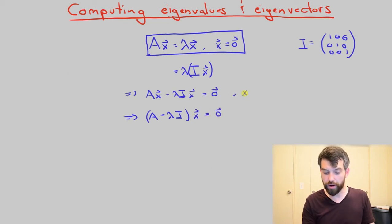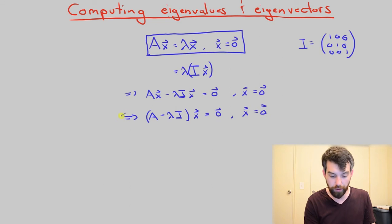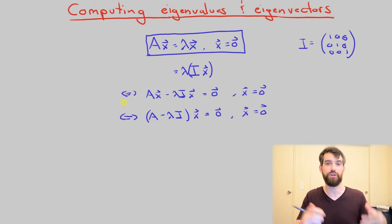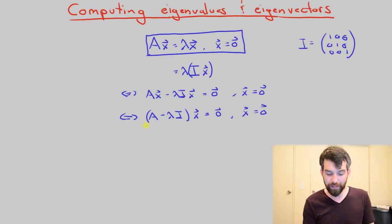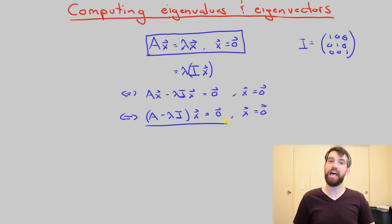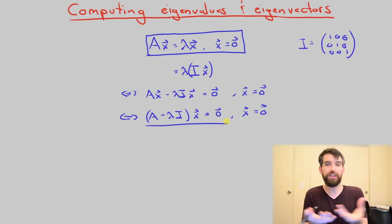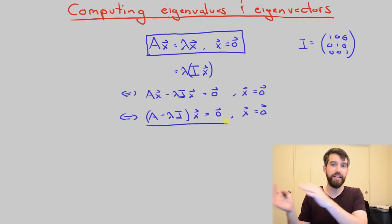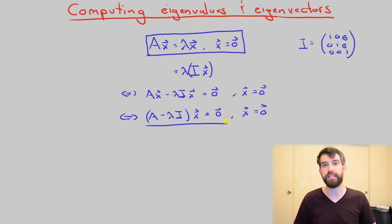And as long as I come along here and add in the condition that this is also imposing that x is not equal to zero, then all of these steps are indeed biconditional. They're if and only if. So what I have left is some equation, and it's a homogeneous system. Notice that A minus lambda I, well this is a subtraction of two matrices, so that's a matrix. This is one matrix times x is equal to zero. That's a homogeneous system.